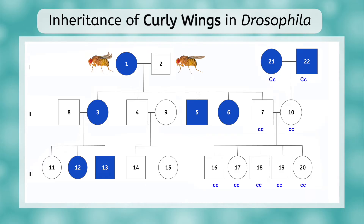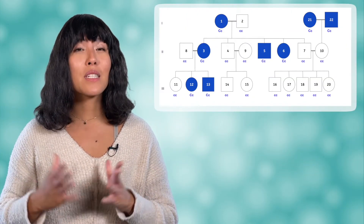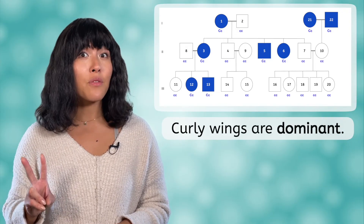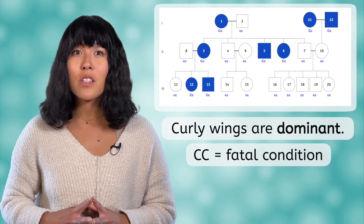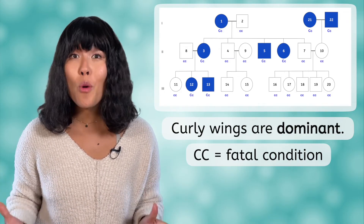From here, we can determine the genotypes of all other individuals. Since the trait is dominant, any unaffected individuals — empty circles and squares — must be little c, little c. The dominant trait would be shown by individuals with genotypes big C, little c, or big C, big C. In this case, every affected individual had a parent without the mutation, so all affected individuals must be big C, little c. It turns out that having two alleles for curly wings, big C, big C, causes such an extreme mutation that the condition is usually fatal — which is probably why we didn't see any homozygous dominant fruit flies on our pedigree.